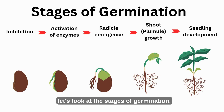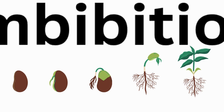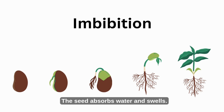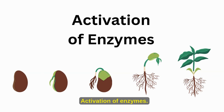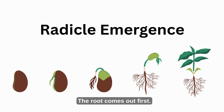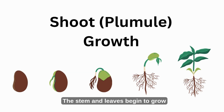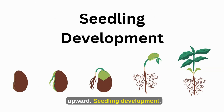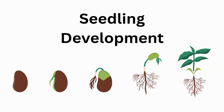Now let's look at the stages of germination. Imbibition: the seed absorbs water and swells. Activation of enzymes: stored food in the seed starts breaking down. Radicle emergence: the root comes out first. Shoot (plumule) growth: the stem and leaves begin to grow upward. Seedling development: the young plant begins photosynthesis.